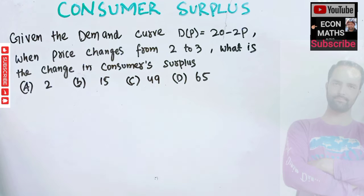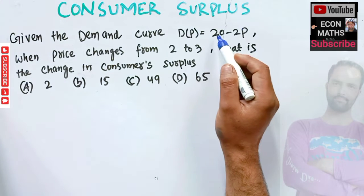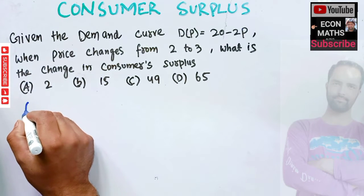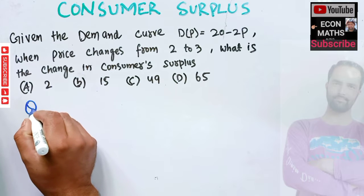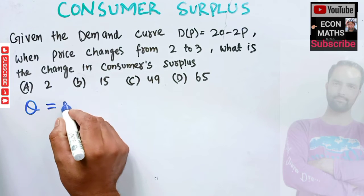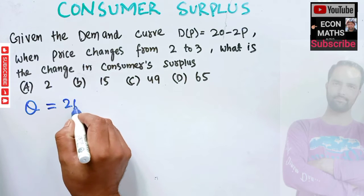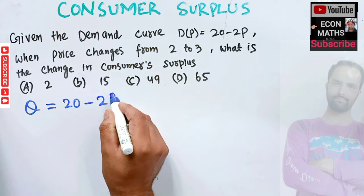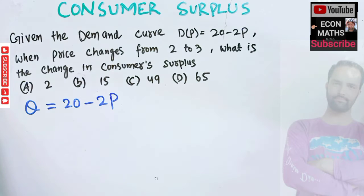The options are 2, 15, 49, and 65. We need to find out the change in consumer surplus. Our demand function is D(p) = 20 minus 2p, or equivalently, quantity Q = 20 minus 2p. This is our demand curve.